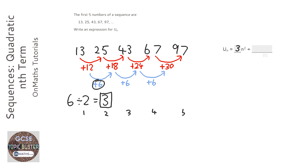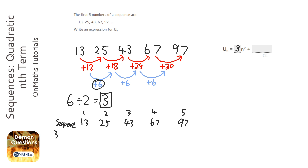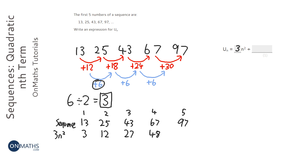So we've got our sequence: 13, 25, 43, 67, and 97. And we're going to write out the 3n squared which we've just discovered. That means we just square the sequence number and then times it by three. So: 1 squared is 1, times 3 is 3; 2 squared is 4, times 3 is 12; 3 squared is 9, times 3 is 27; 4 squared is 16, times 3 is 48; 5 squared is 25, times 3 is 75.